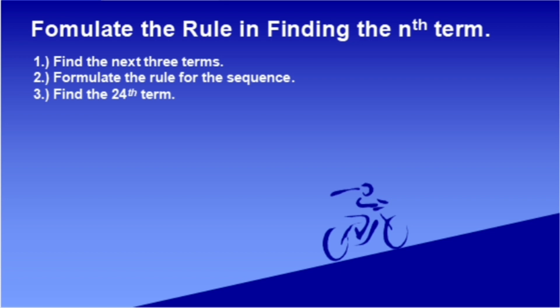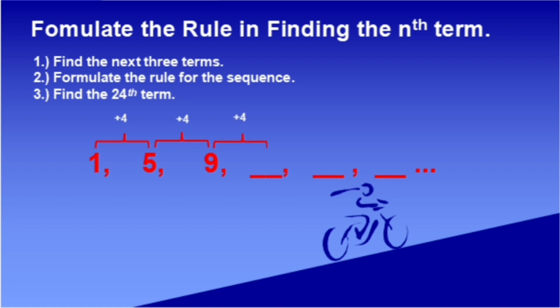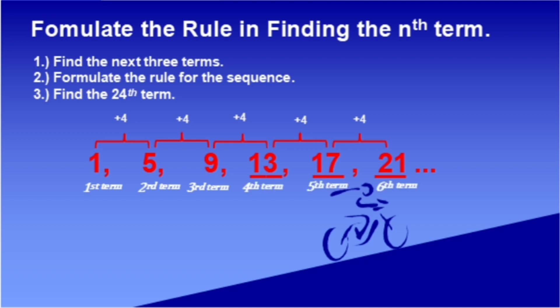Now let us try another example for better understanding. For number 1, find the next 3 terms of the sequence 1, 5, 9. The constant difference between the terms is 4, so we add 4 each time. We have 1 plus 4 is 5, 5 plus 4 is 9, 9 plus 4 is 13, 13 plus 4 is 17, and 17 plus 4 is 21. So 1, 5, 9, 13, 17, and 21 are the 1st through 6th terms.